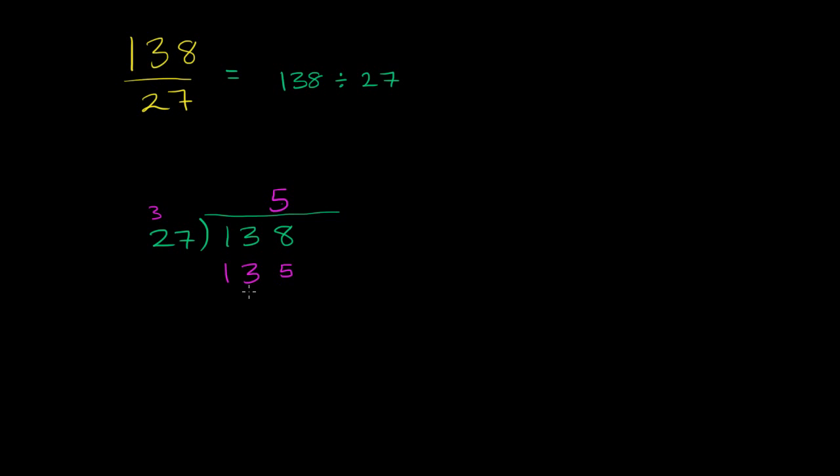And it seems like we got it right. If this number was larger than 138, then that means we shot too high here. And if the difference between 138 and this number were larger than 27, then that means we shot too low. But here, the difference seems just right. 138 minus 135 is 3.